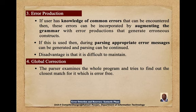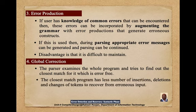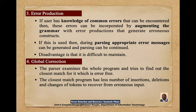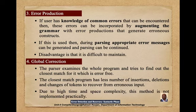The disadvantage of error production is that it is difficult to maintain. The fourth method is global correction, where the parser examines the whole program and tries to find the closest error-free match for it. The closest match program has the least number of insertions, deletions, and token changes. Due to high time and space complexity, this method is not implemented practically.